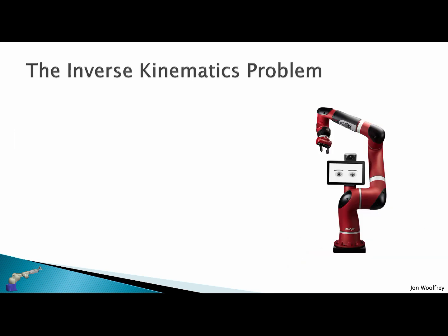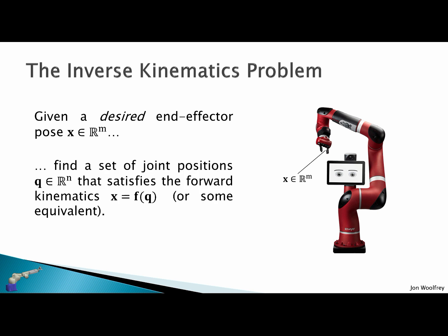The inverse kinematics problem can be stated like so. Given a desired end effector pose X in M dimensions, then find a set of joint positions Q in N dimensions that satisfies the forward kinematics equation. X is some vector function of Q. In other words, we want to solve Q is some inverse function of X.